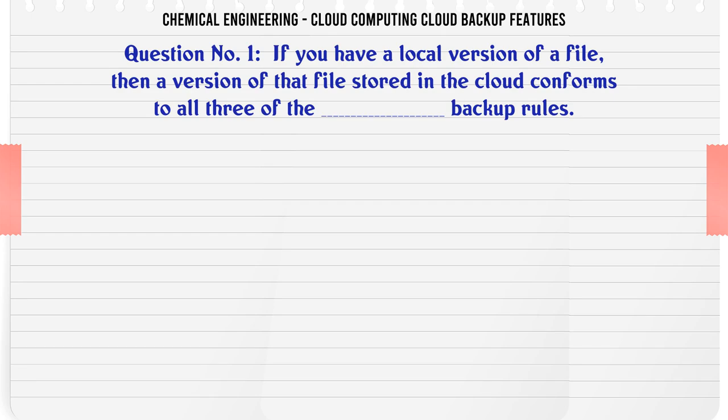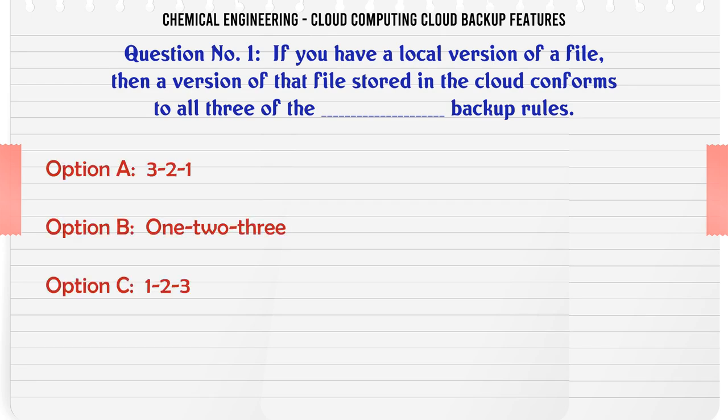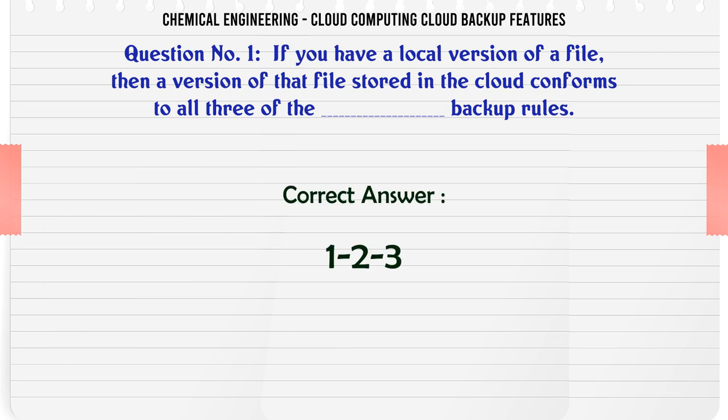If you have a local version of a file, then a version of that file stored in the cloud conforms to all three of the backup rules. A) 3-2-1. B) 1-2-3. C) 1-2-3. D) All of the mentioned. The correct answer is: 1-2-3.